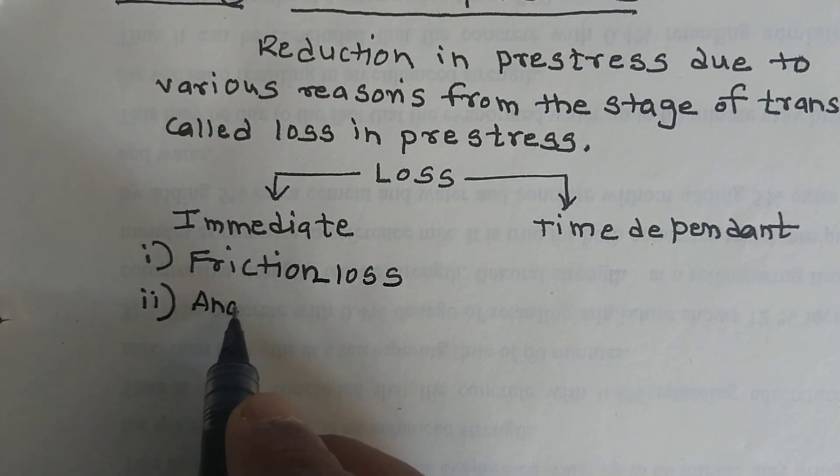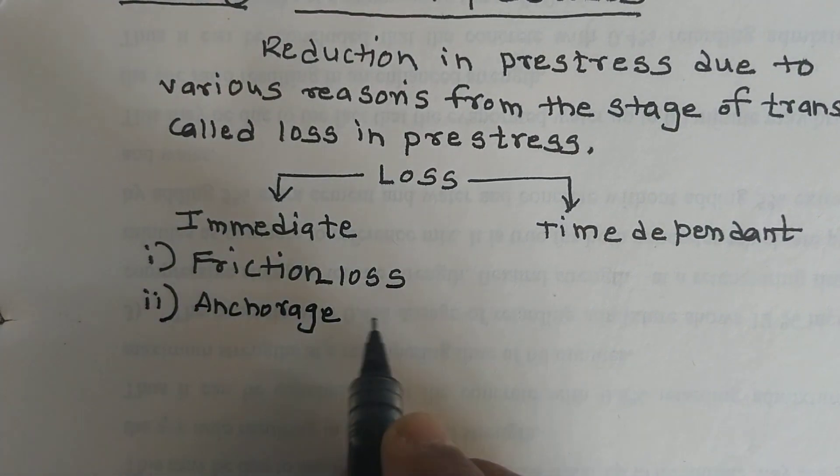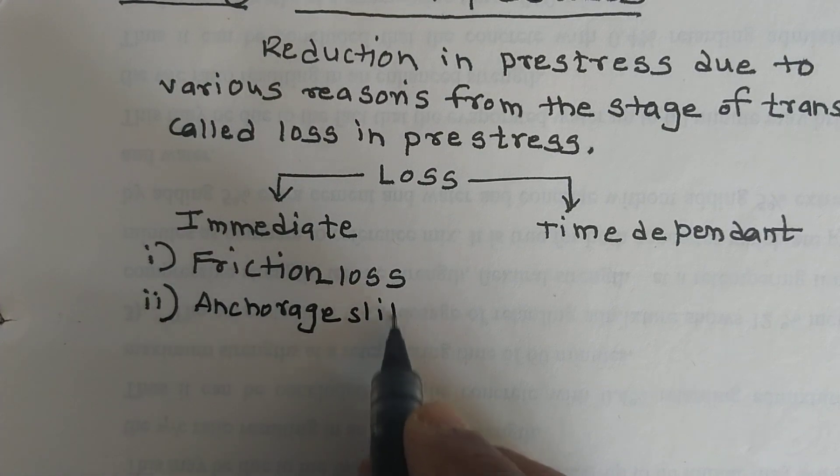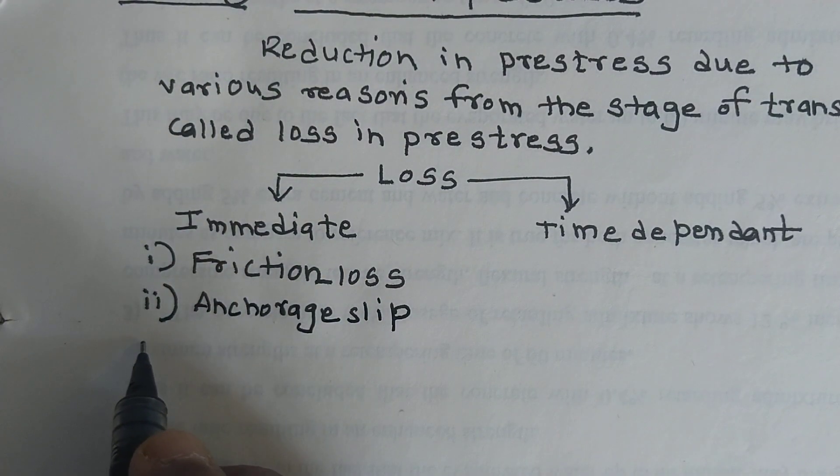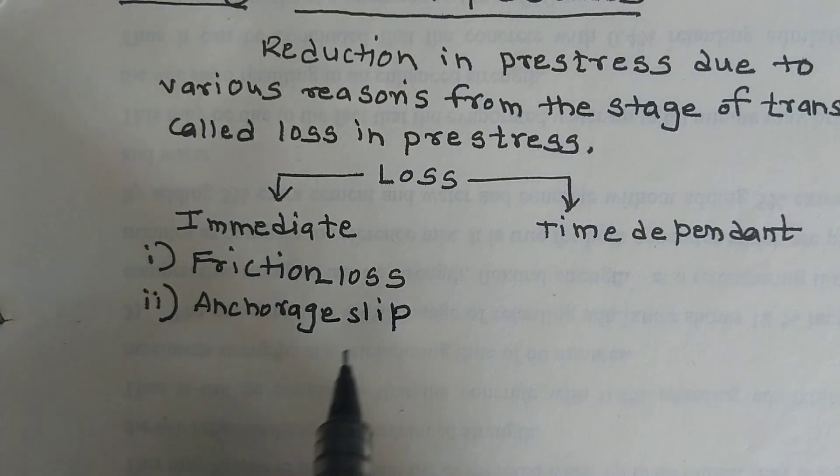Second is anchorage slip loss. When at a time of providing prestressing force, the hydraulic jack is provided. When there is slippage in hydraulic jack, the slip loss is developed.